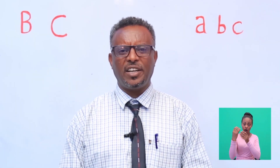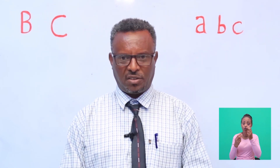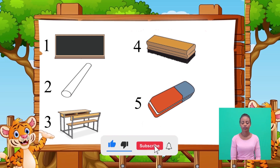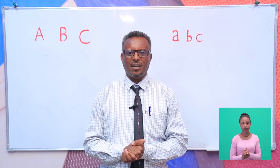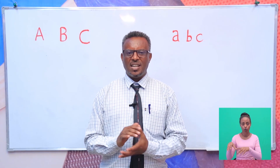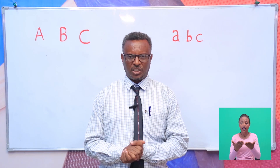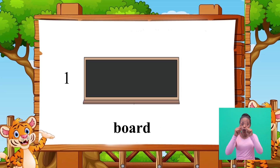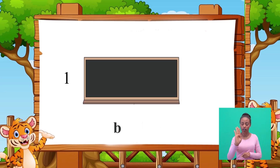Look at the pictures and write the names of the objects. All right students, let's do it together and take corrections. Look at picture one. Did you write board? That's good. Board — B, O, A, R, D — board.